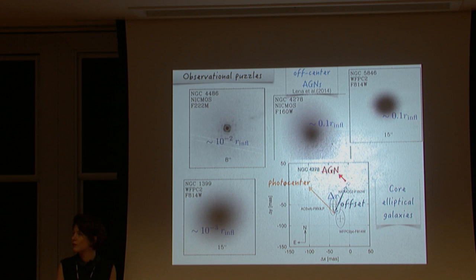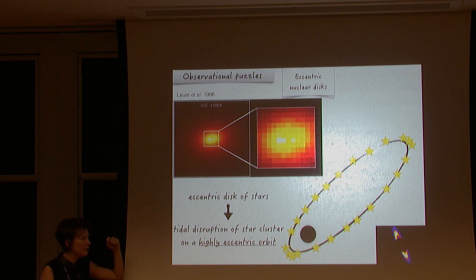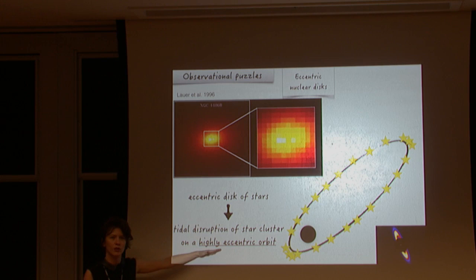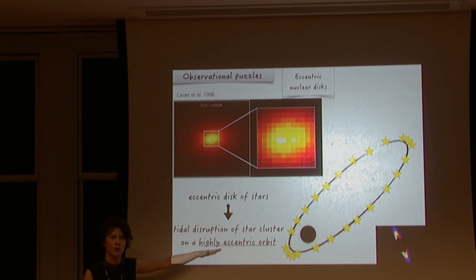Finally, since these low mass ratio systems are expected to be on highly eccentric orbits, this has interesting implications for the star cluster that is tidally stripped when the satellite reaches closest approach to the central supermassive black hole, potentially forming an eccentric nuclear disk. The high eccentricity is key to this process, and I find it very interesting as an additional implication of this work.